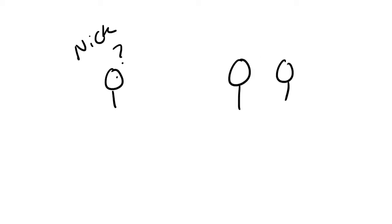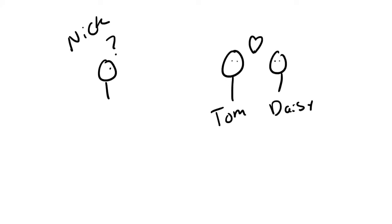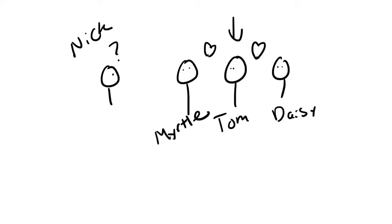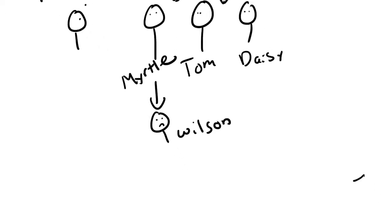It's basically about a protagonist, Nick, who observes a love story filled with cheating, drama, and death. We first learn about Nick, and then Tom and Daisy, a married couple. Shortly after, we're introduced to Myrtle, who is Tom's mistress. But Myrtle is already married to somebody else — Wilson.